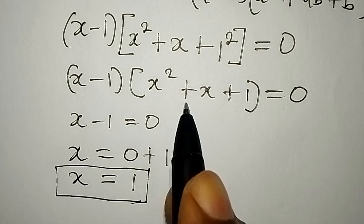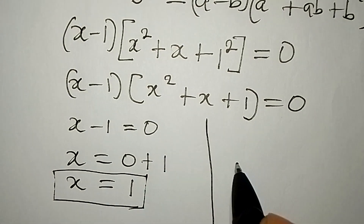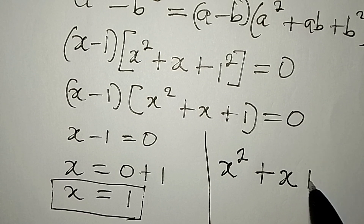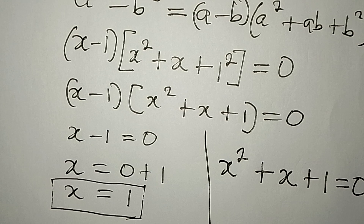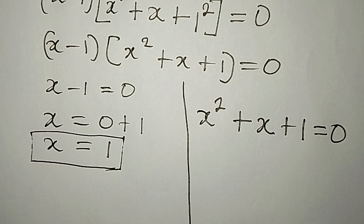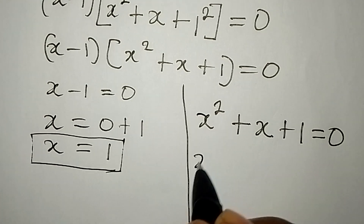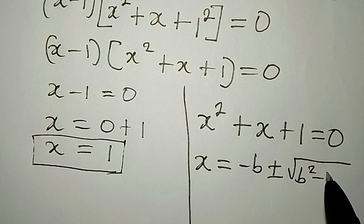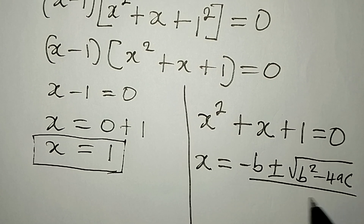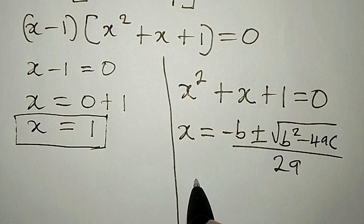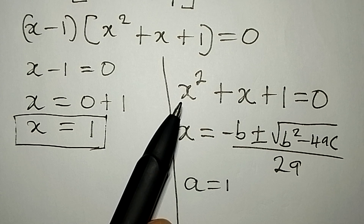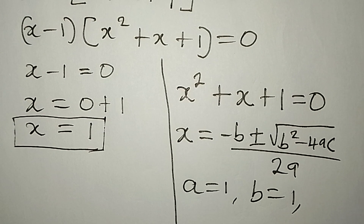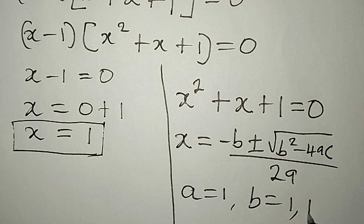To get the other values of x, we solve x² + x + 1 = 0 using the quadratic formula: x = (-b ± √(b² - 4ac)) / 2a. Here a = 1 (coefficient of x²), b = 1 (coefficient of x), and c = 1 (the constant).